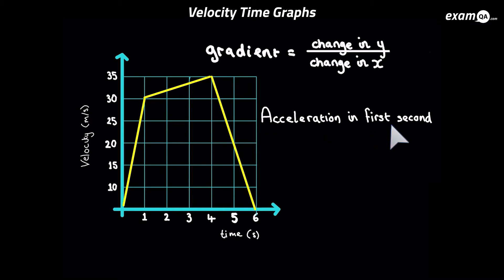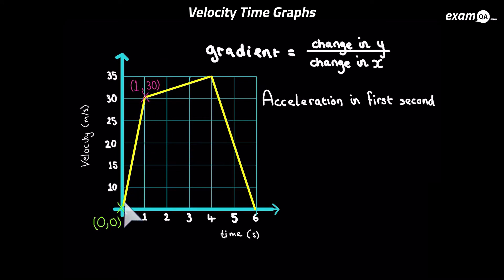Let's work out the acceleration in the first part of the journey, in the first second between t = 0 and t = 1. If you haven't yet watched the video on gradient of a line, you should do that first. We can see there's a straight line between t = 0 and t = 1, and on this line you can choose any two coordinates to work out the gradient. Preferably choose nice integer coordinates.